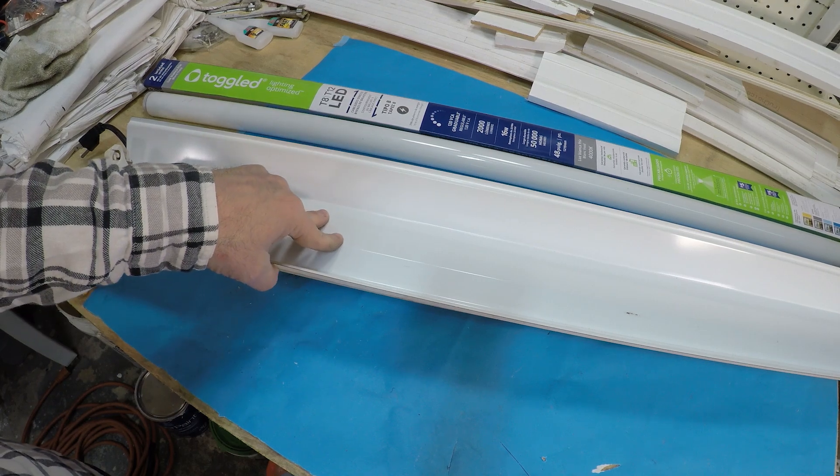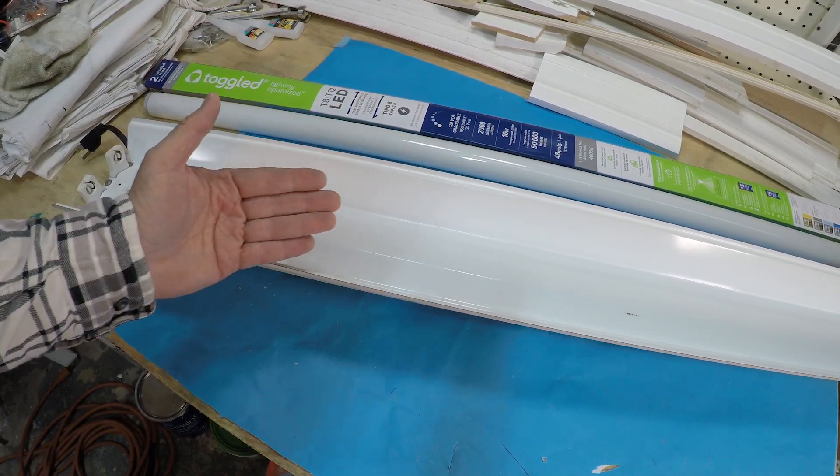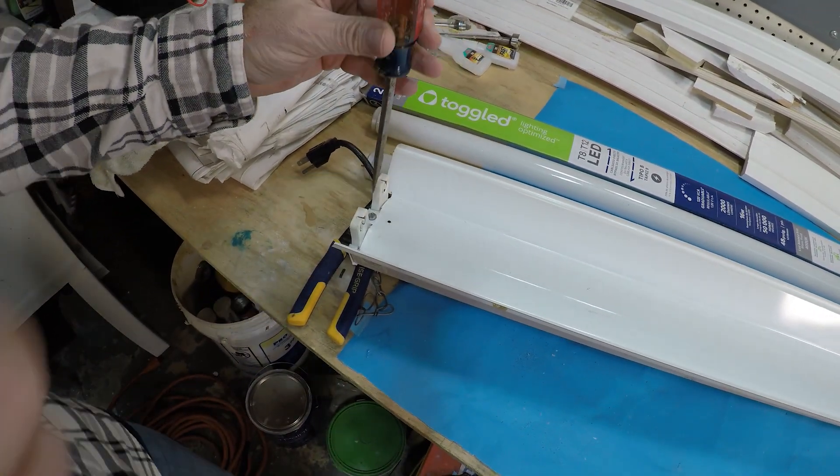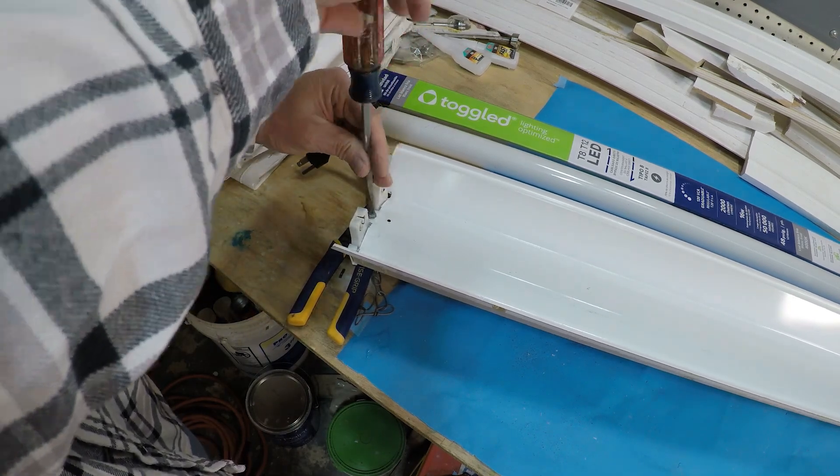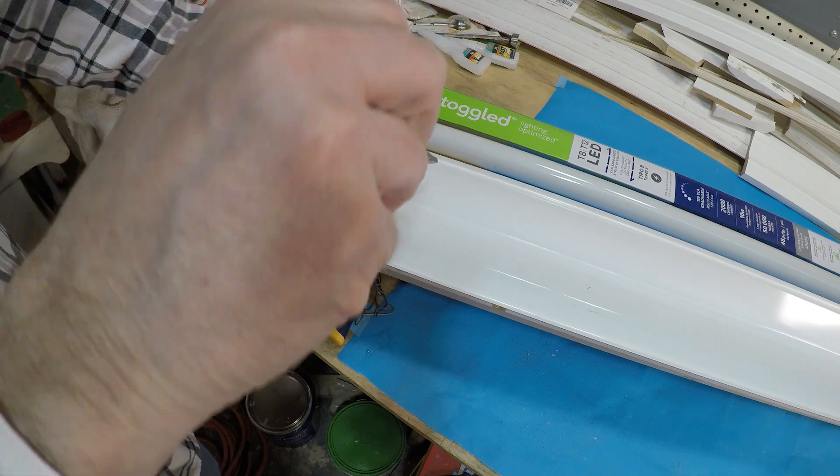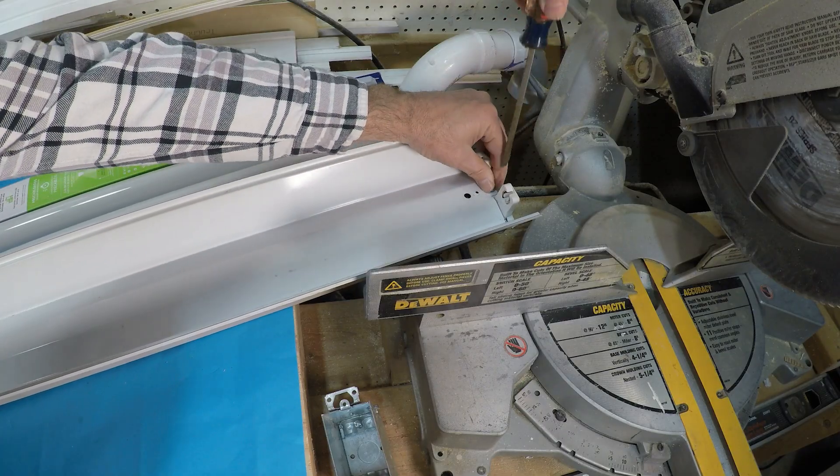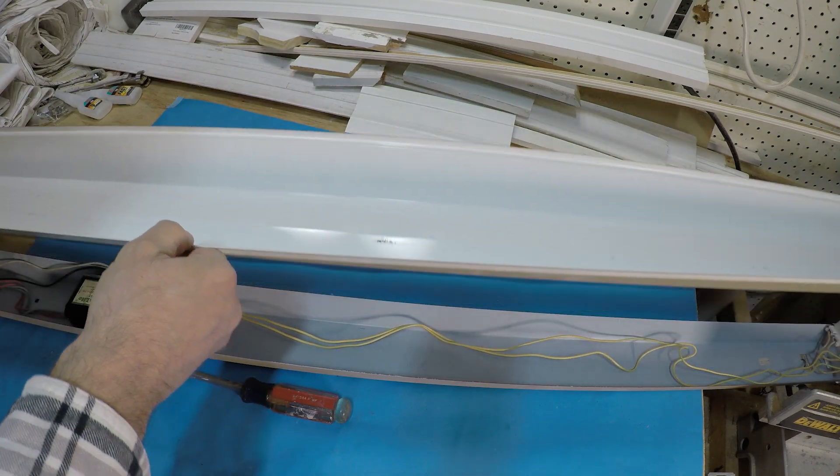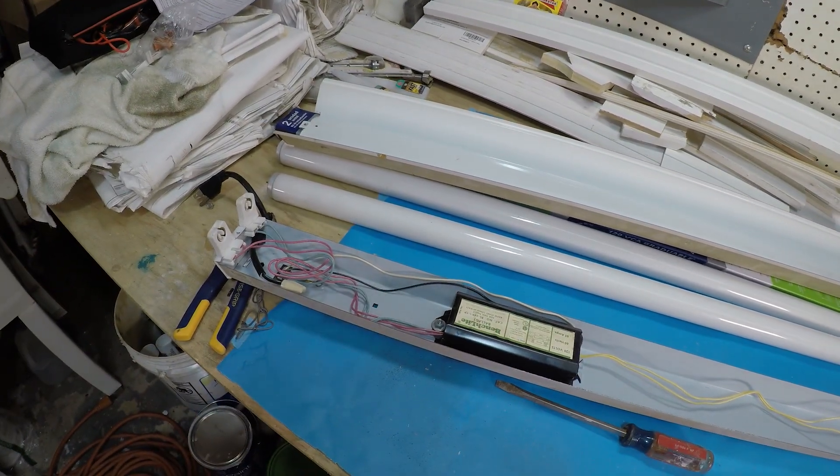And to convert these things, we have to take the ballast out of the equation. So first, we've got a screw on this side to remove. And then we're going to do the same on the other side. We're going to take off this center piece.